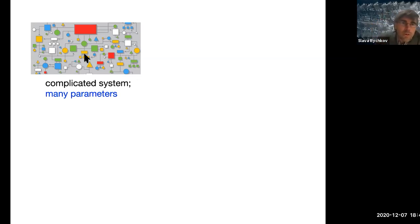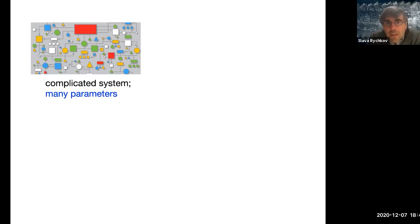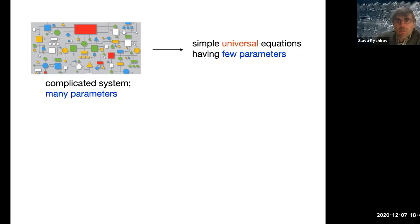In physics we often have to deal with complicated systems which have many parts and also many parameters characterizing these parts and how they are connected to each other. So you might think that because the system is so complicated, any theoretical description of the system is going to be as complicated as the system itself.